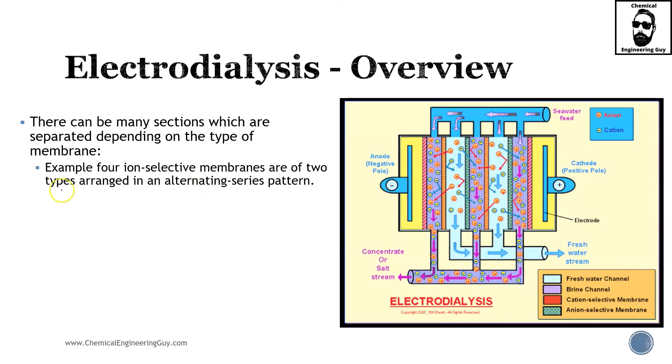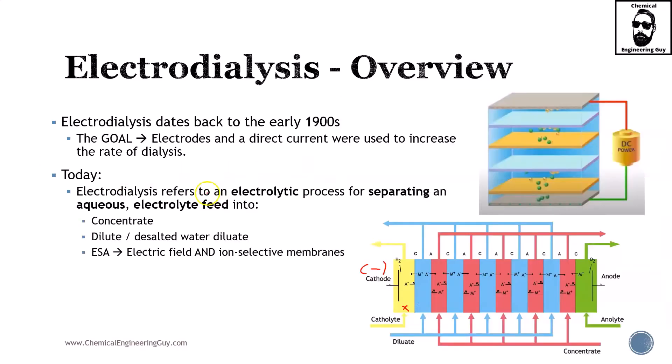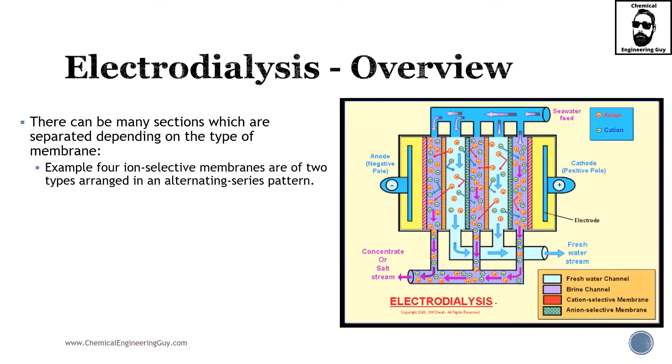This is an example: electrodialysis ion-selective membranes are of two types arranged in an alternating series pattern. Remember, this is one series, two, three, four, and five. The important part right here is to understand that typically you're not going to see big systems—you're going to see repeating systems.